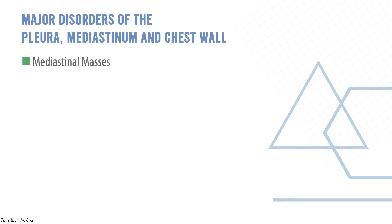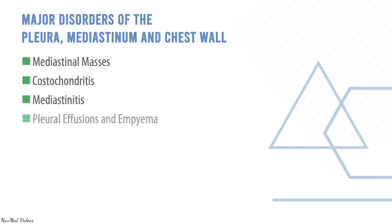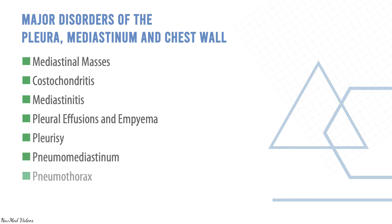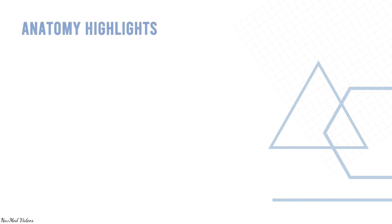The common major disorders include masses, mediastinitis, costochondritis, effusions and empyema, pleurisy, and pneumothorax. These are the common things you see in the emergency department. I'm going to go briefly on all of them one by one, but first the anatomy.